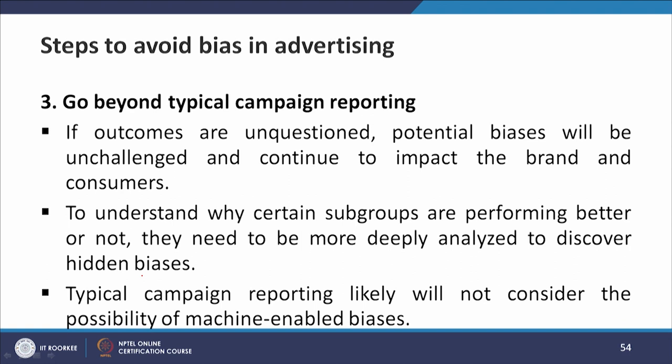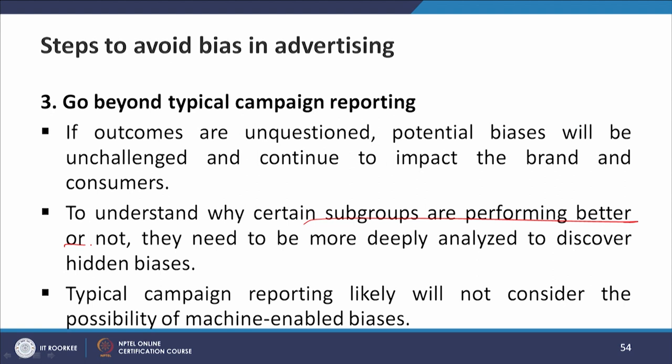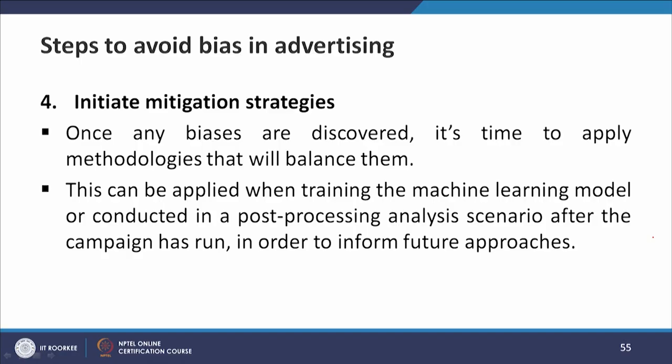The third step is to go beyond typical campaign reporting. If outcomes are unquestioned, potential biases will be unchallenged and continue to impact brand management and consumers. To understand why certain subgroups are performing better or not, they need to be more deeply analyzed to discover hidden biases, as typical campaign reporting likely will not consider the possibility of machine-enabled biases. The fourth step is to initiate mitigation strategies. Once any biases are discovered, it is time to apply methodologies that will balance them. This can be applied when training the machine learning models or conducting a post-processing analysis after the campaign has run in order to inform future approaches.